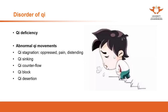Qi block is the most severe stage of qi stagnation. Qi stagnation means the flow of qi moves slower than it should; qi blockage means the qi stops due to stagnation or other pathogens. The symptoms of qi block most often present as the patient being unconscious — such as a coma. The causes of qi block can be extreme emotion, phlegm, or other external exogenous pathogens.